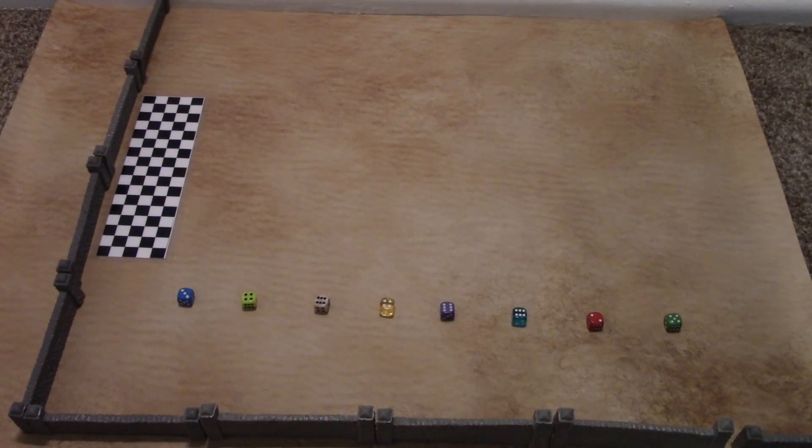And let's go down the line. We got ocean blue in first place, followed by lime in second place, tan in third place, yellow in fourth place, purple in fifth place, cyan in sixth place, red in seventh place, and lastly green in eighth place.